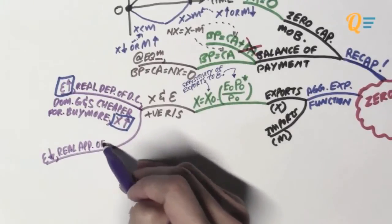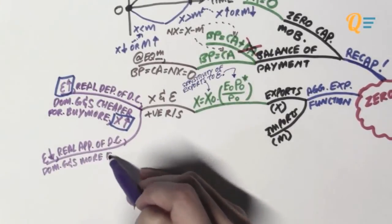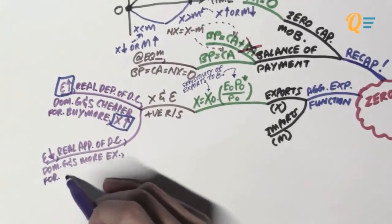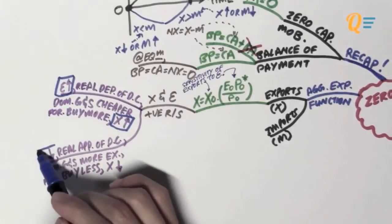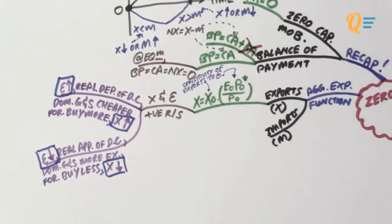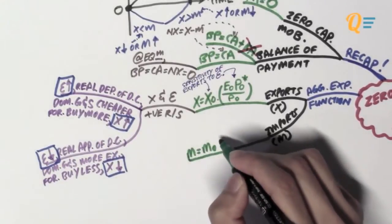So let's take a look at it on the other way around. So let's say Epsilon goes down, which means a real appreciation of the domestic currency. Our goods become more expensive. So foreigners are going to buy less of those kind of stuff. Therefore, exports are going to fall. So you can see that there is again a positive relationship between Epsilon and exports.